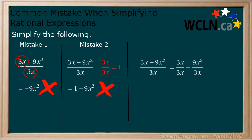We can reduce our 3x over 3x to get 1. We can also reduce 9x squared over 3x to get 3x. This leaves us with 1 minus 3x. You can see how our earlier mistakes led us to incorrect answers now.